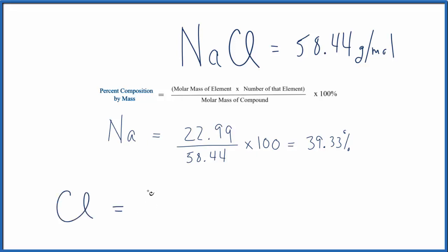which is 35.45 grams per mole. We divide it by the entire molar mass, multiply that by 100, and when we do that, we find out that the percent composition by mass of chlorine is 60.66%.